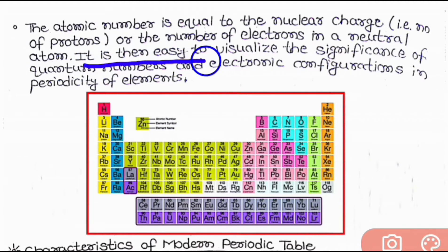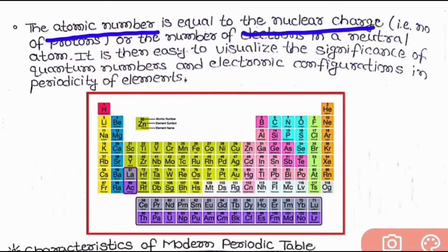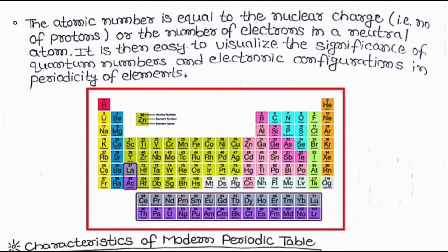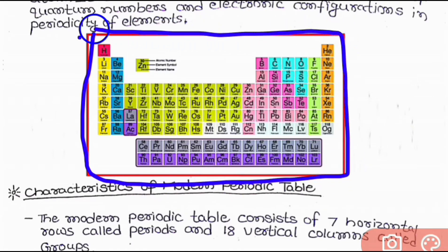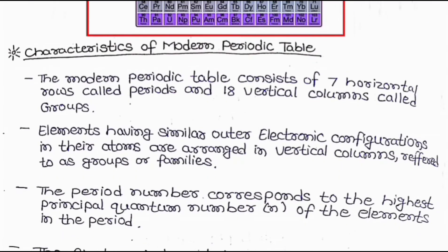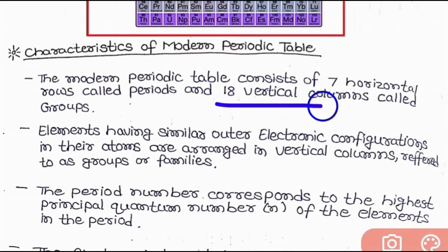It is then easy to visualize the significance of quantum numbers and electronic configuration in the periodicity of elements. The atomic number equals the nuclear charge, which is the number of protons or electrons. Here is the diagram of the periodic table. Now let us come to the characteristics of the modern periodic table. The first characteristic is that the modern periodic table consists of seven horizontal rows called periods and 18 vertical columns called groups.